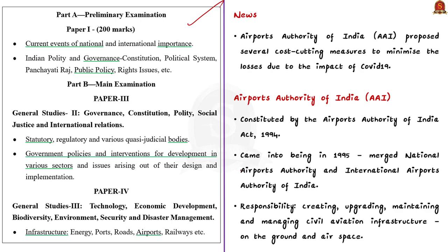The Airports Authority of India was constituted by an act of parliament — the Airports Authority of India Act 1994. AAI was established by merging the National Airports Authority and the International Airports Authority of India. AAI is responsible for creating, upgrading, maintaining and managing civil aviation infrastructure both on the ground and airspace in the country.